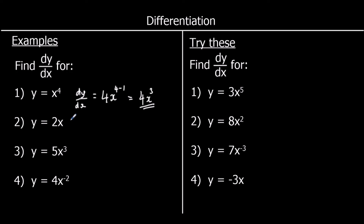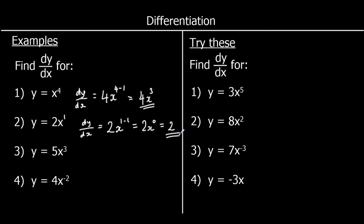y equals 2x. This isn't actually a curve at all — it's a straight line, and you might already know the gradient because it's in the form y equals mx plus c. But if we times by the power then take one off the power: the power at the moment is 1, so we times by 1 — 1 times 2 is 2 — and then we've got x to the power of 1 minus 1, which is x to the power of 0. Anything to the power of 0 is 1, so we've just got 2. That's more complicated than just saying 2x is a straight line with a gradient of 2 — it's got a constant gradient. So dy/dx is just 2; it's always going to be 2 no matter what the value of x.